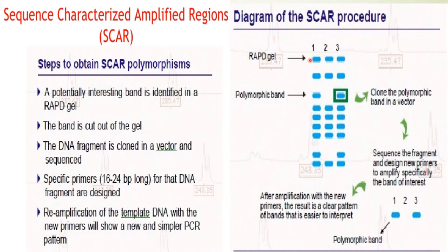First, the potentially interesting band is identified in the RAPD gel, and the band is cut out of the gel. The DNA fragment is then cloned in a vector and sequenced. The polymorphic band is cloned in a vector, the fragment is sequenced, and a new primer is designed to amplify specifically the band of interest.